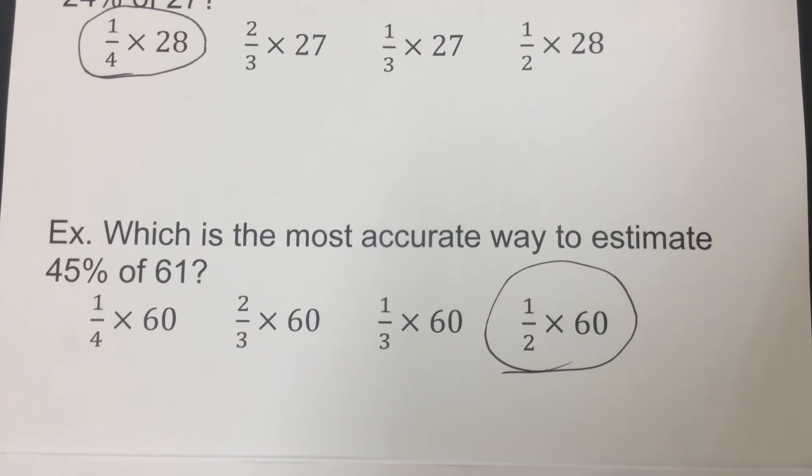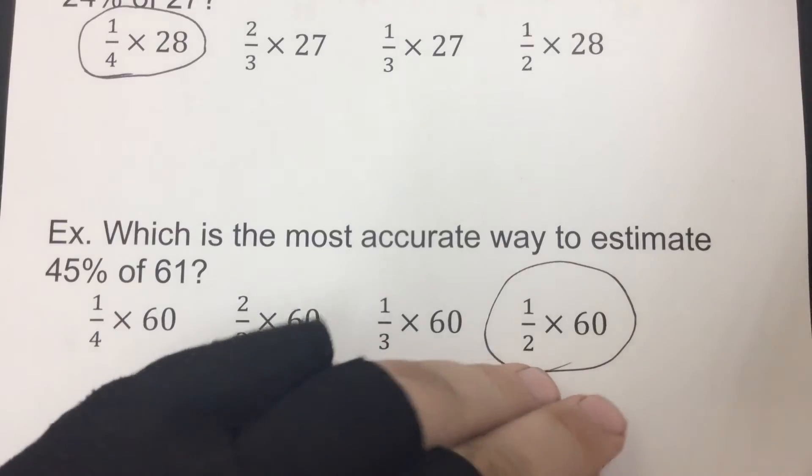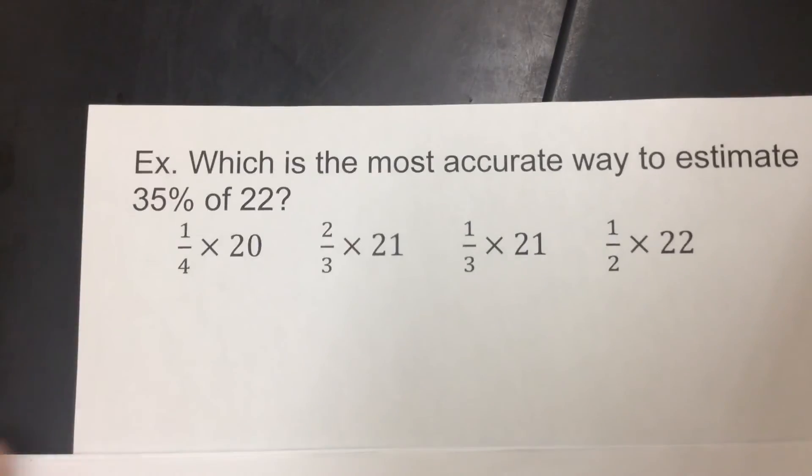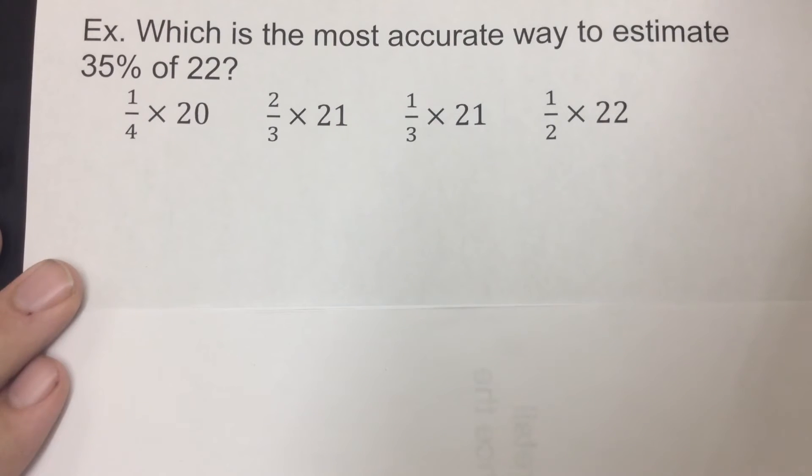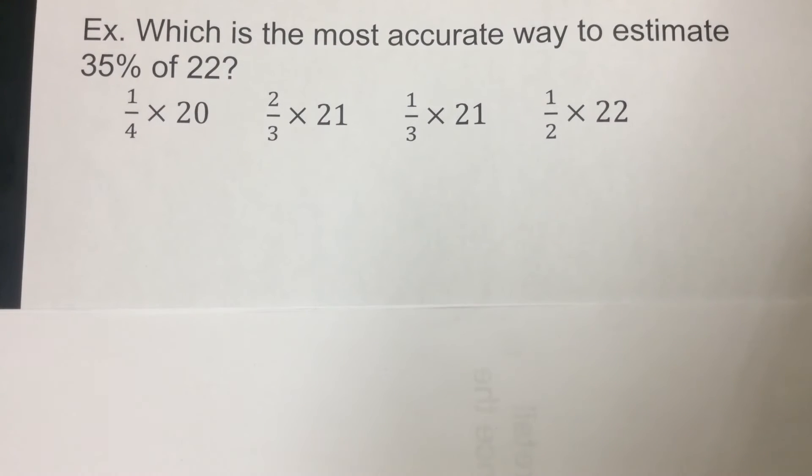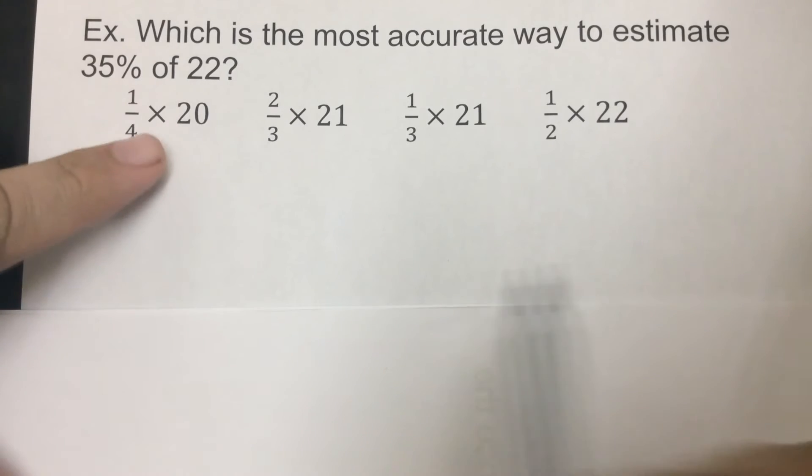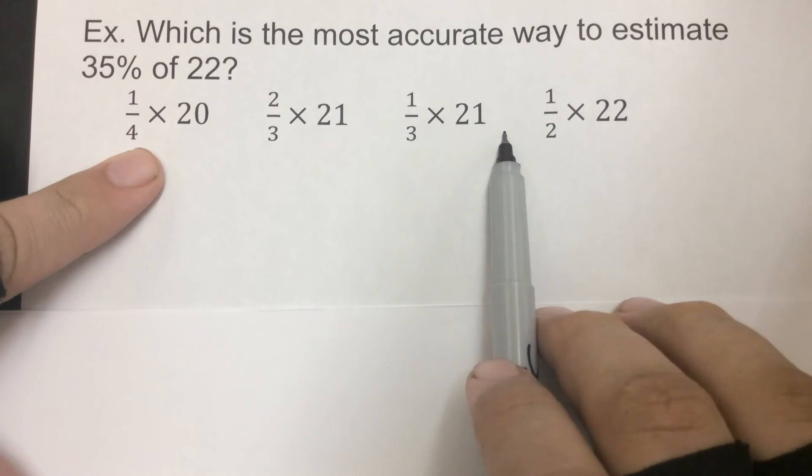Okay, so first thing you're looking at is that fraction. What is that percent gonna convert over, which fraction would fit that one the best? Now we will run into some things like this. We have 35% of 22. Well, 35% is gonna be one-third because one-third is 33%. Now if you notice here, we have 20, 21, 22.